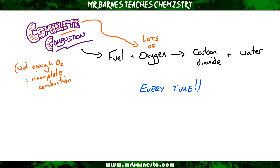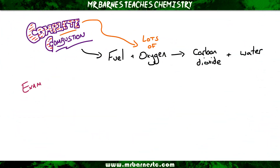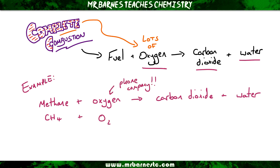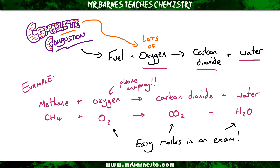If we use methane as the example, if they ask you to write a word equation for the reaction of methane, it will be: methane plus oxygen produces carbon dioxide and water. Normally they'll give you the formula of the thing that's reacting. Writing the balanced equation is straightforward: for oxygen, think of the phone company - it's O2, goes around in pairs. Carbon dioxide you should all remember is CO2, and water you should know is H2O. In the exam, just remembering O2, CO2 and H2O is going to get you easy marks.